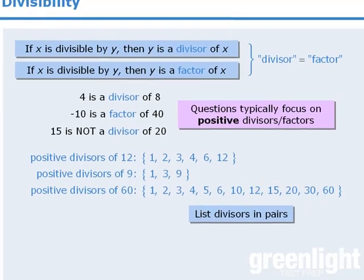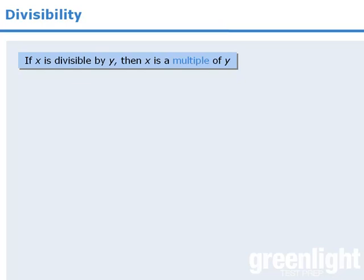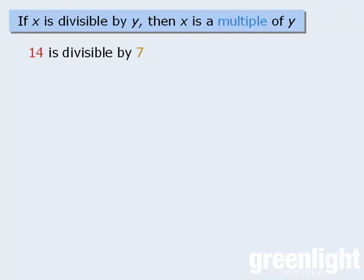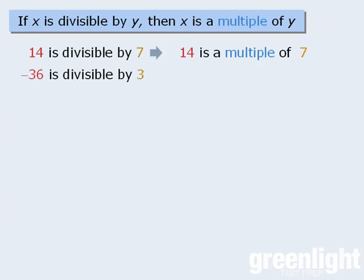Okay, another important concept has to do with multiples. If x is divisible by y, then x is a multiple of y. For example, since 14 is divisible by 7, we can also say that 14 is a multiple of 7. Similarly, since negative 36 is divisible by 3, we can say that negative 36 is a multiple of 3.